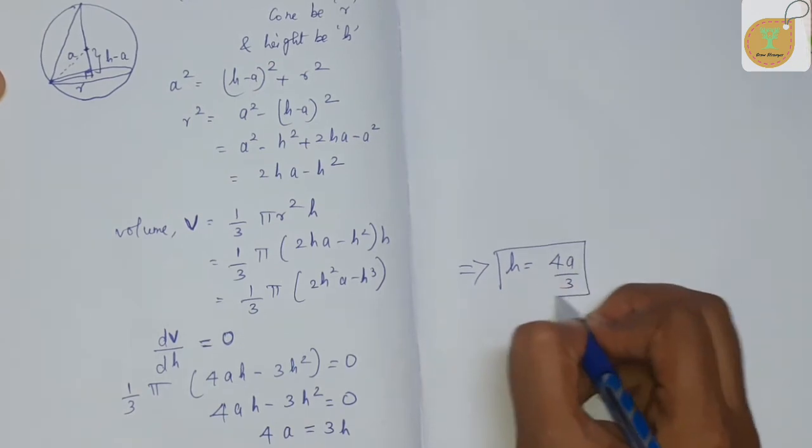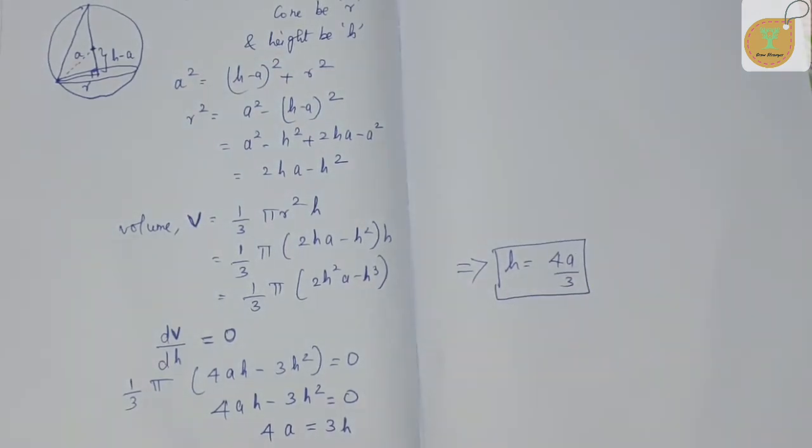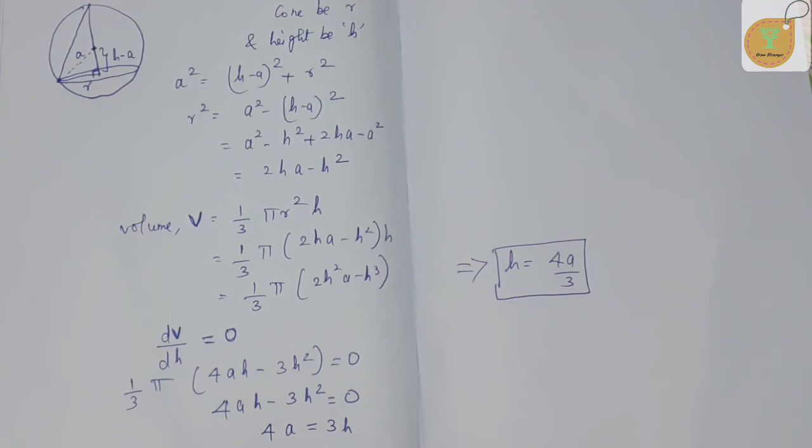So the height of the cone is H = 4a/3, at which the volume of the cone is maximum. Thanks for watching.